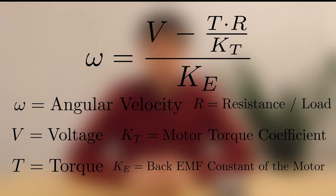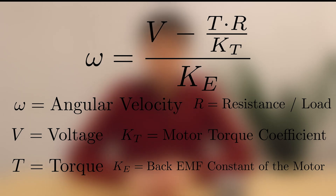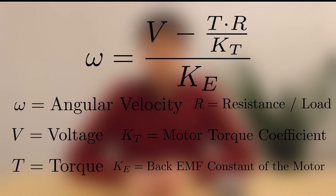If we look at this equation for angular velocity, we see that the angular velocity — aka motor speed — is proportional to the voltage and negatively proportional to the torque. Therefore, if we want to increase the motor speed, we can either increase the voltage delivered or decrease the torque. Since decreasing the torque would require changing your design or load, it is much simpler to increase the voltage. The equation also demonstrates that at constant voltage, a higher torque results in a lower RPM.